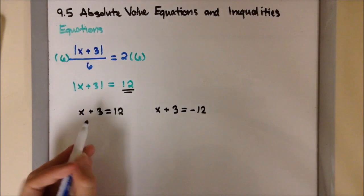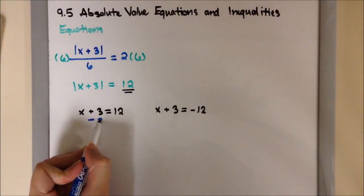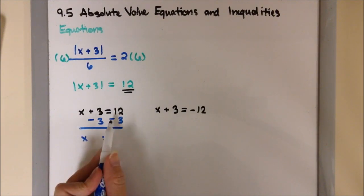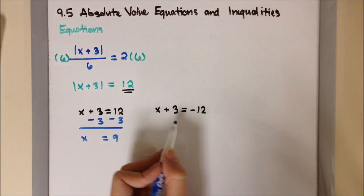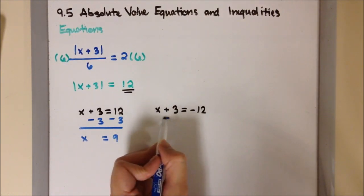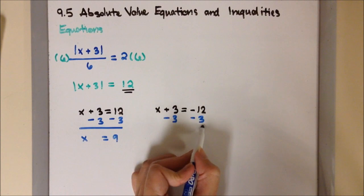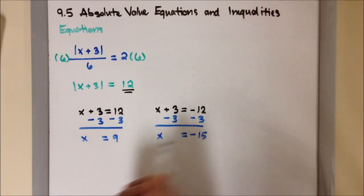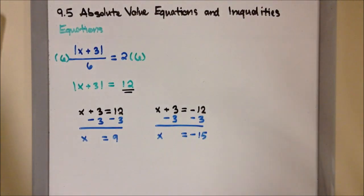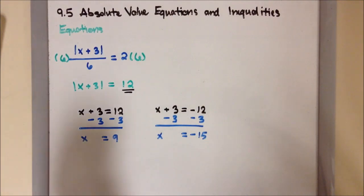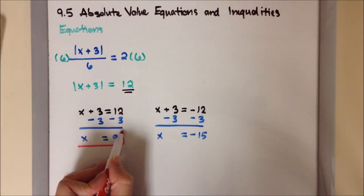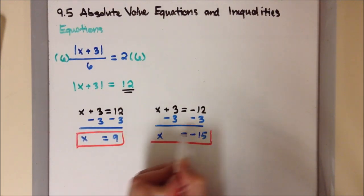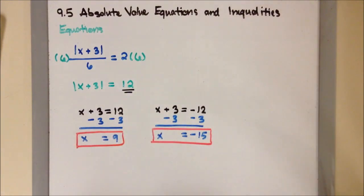Now it's time to solve for x. For the first equation, I'm going to subtract 3 on both sides, giving x equals 12 minus 3, which is 9. For the second equation, I'm also going to subtract 3 on both sides, giving x equals negative 12 minus 3, which is negative 15. So here are our two final answers: x equals 9, and x equals negative 15.